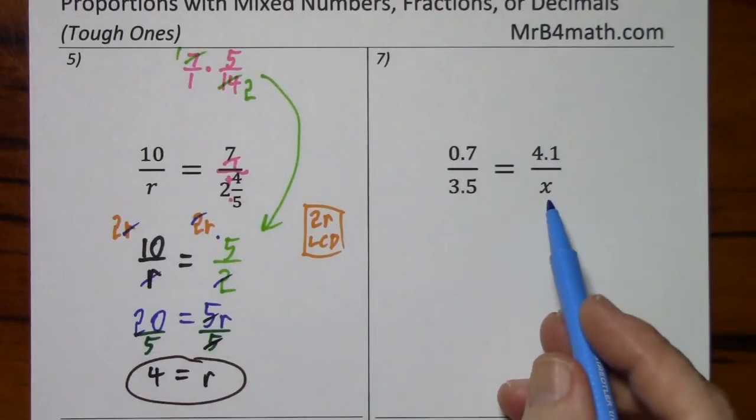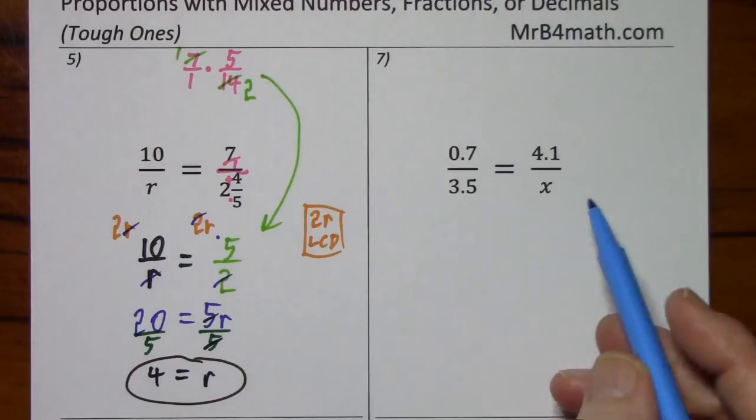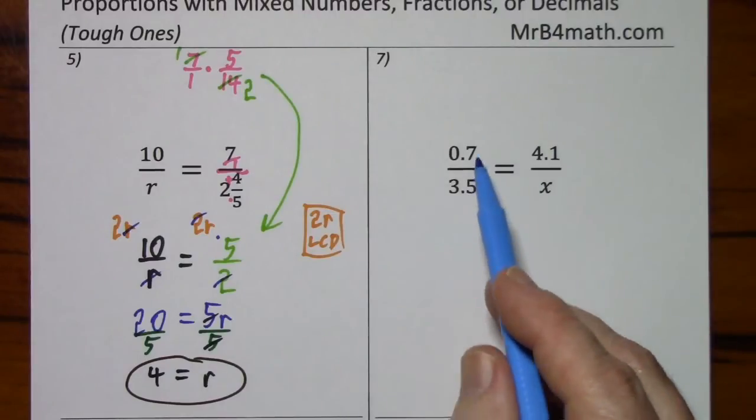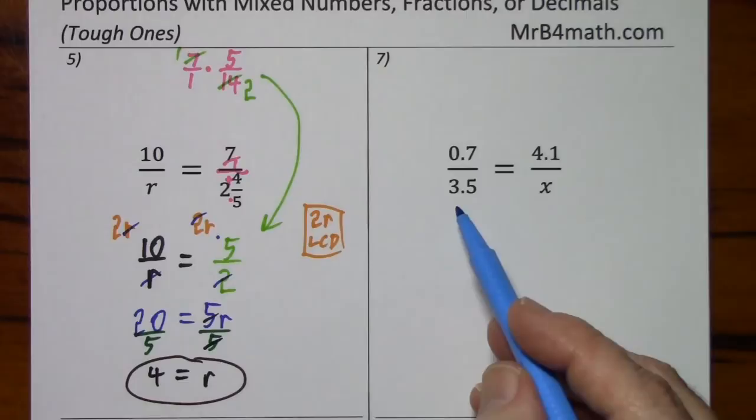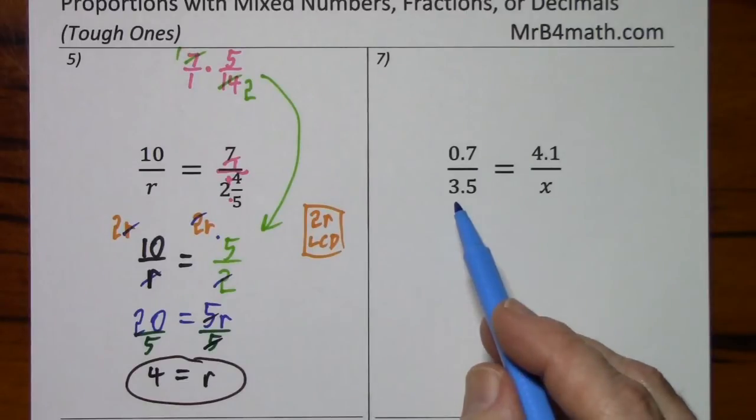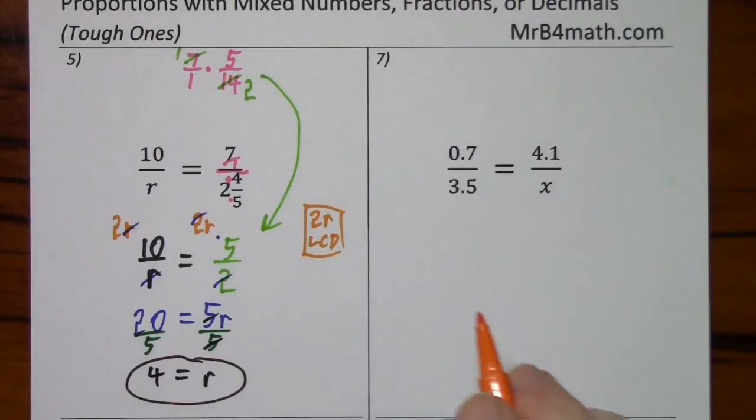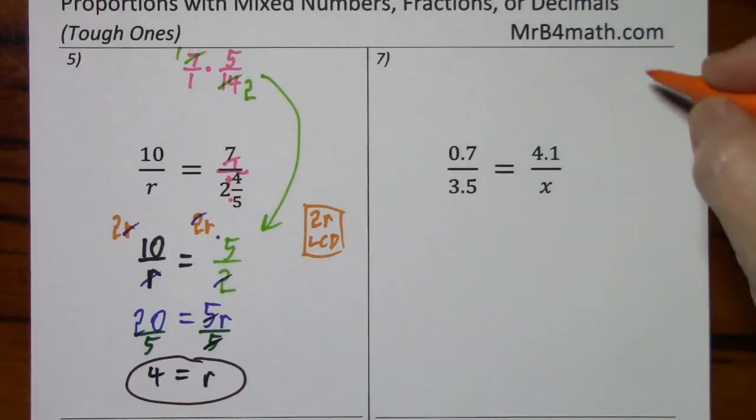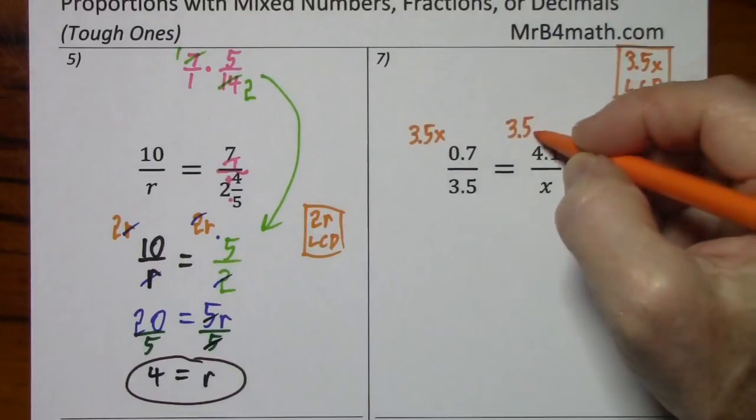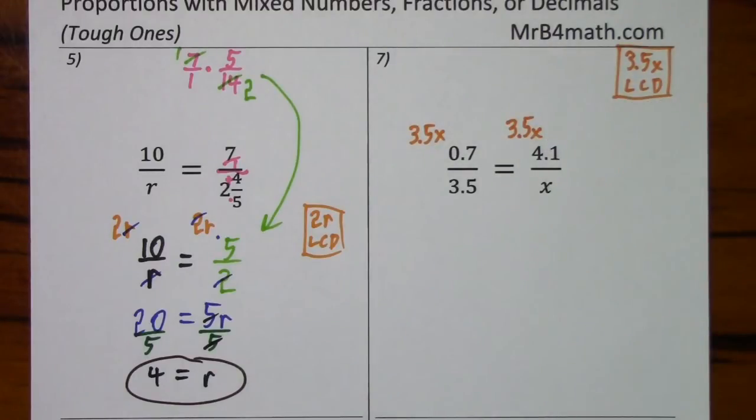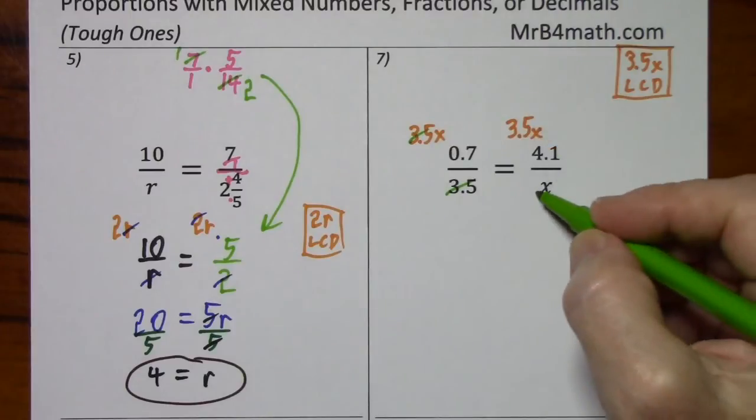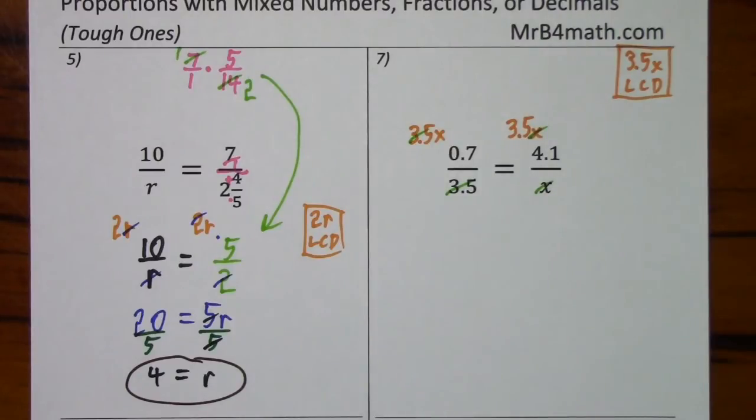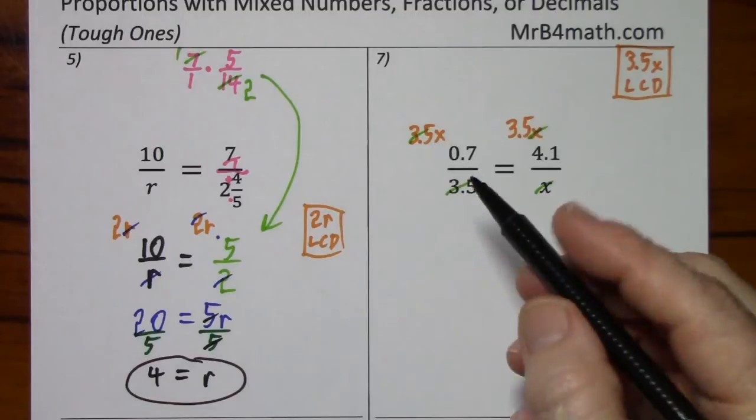Looking at this one, you have variable in the denominator. You need to get this out of here. On this side, we could clean this up first. But usually with decimals, I just leave them as they are and deal with them when I have to. So we need to just clear this of fractions. We'll multiply by the LCD, which is 3.5x. And of course, they cancel. And they cancel. So we're left with 7 tenths x.